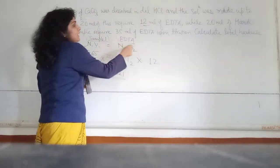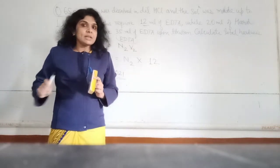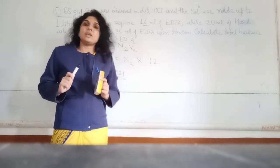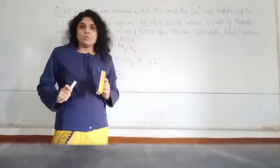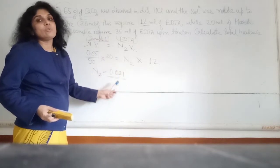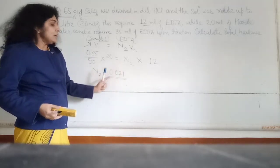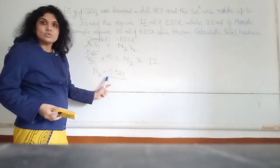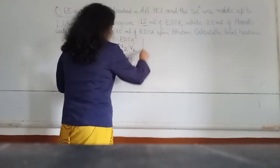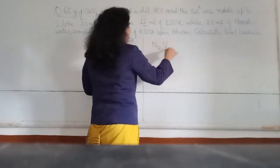The normality we found, 0.021, is the normality of EDTA. We could also remove its strength using Strength = Normality × Equivalent Weight, but we don't need EDTA's strength in this numerical. What we need is the normality of the unknown Sample 2. We apply N1V1 = N2V2 again, where N1V1 refers to EDTA.